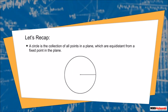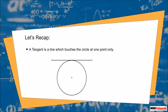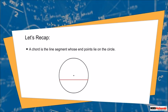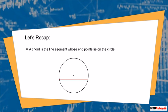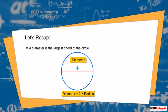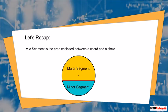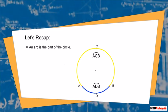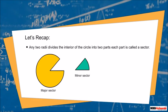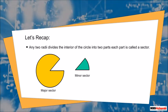Let's recap. A circle is the collection of all points in a plane which are equidistant from a fixed point. A tangent is a line which touches the circle at one point only. A chord is the line segment whose end points lie on the circle. A diameter is the largest chord of the circle. A segment is the area enclosed between a chord and the circle. An arc is a part of the circle. Any two radii divide the interior of the circle into two parts — each part is called a sector.